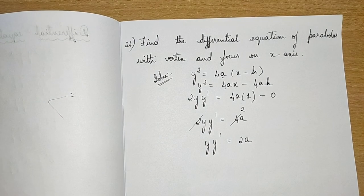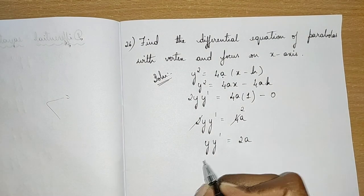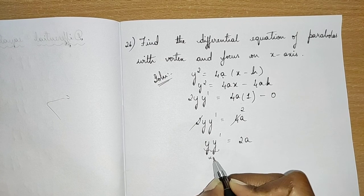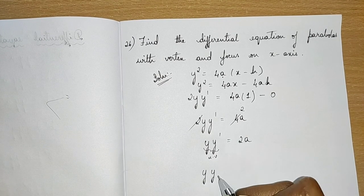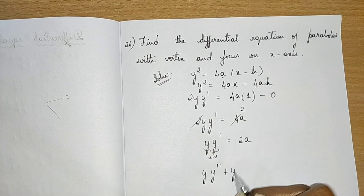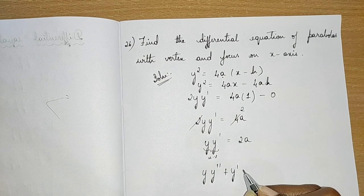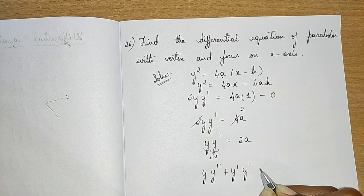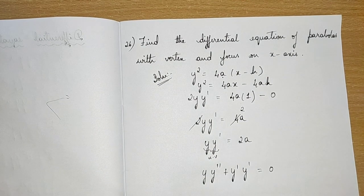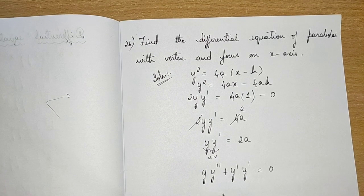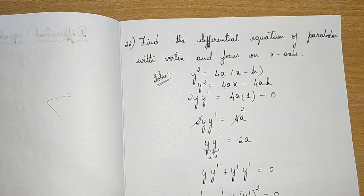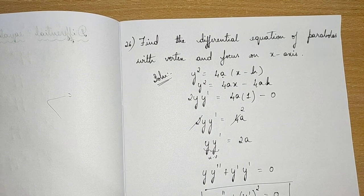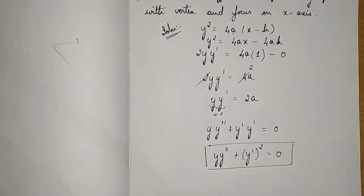Now differentiating again using the u·v product rule: first function into differentiation of second function — y·y'' — plus y'·(differentiation of y) = y'². The differentiation of a constant 2a is 0. So we get y·y'' + (y')² = 0, which is the required differential equation.